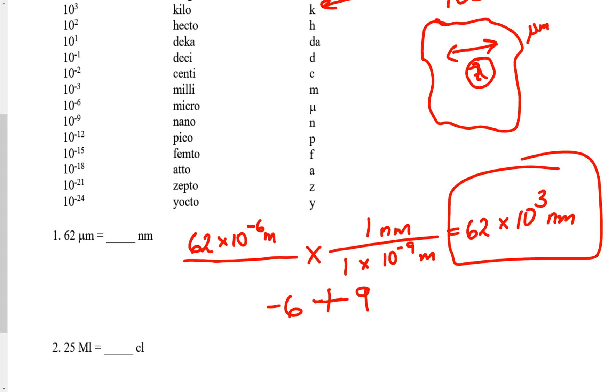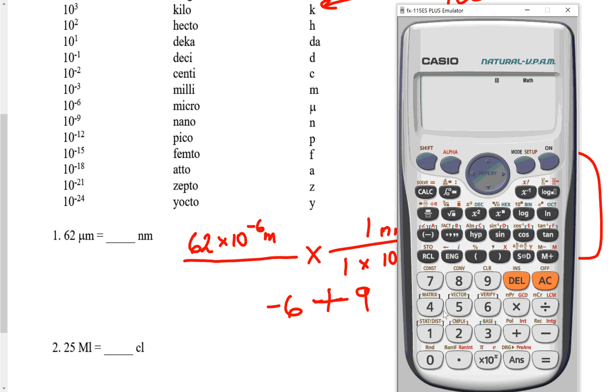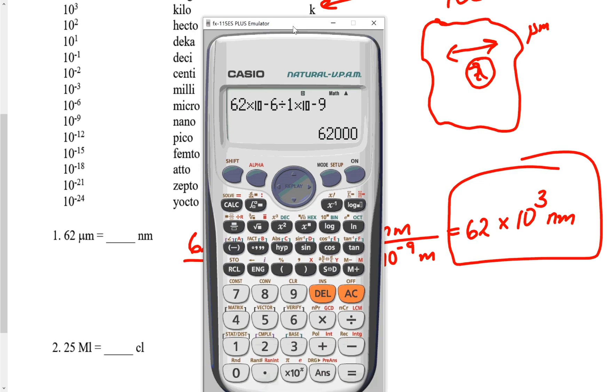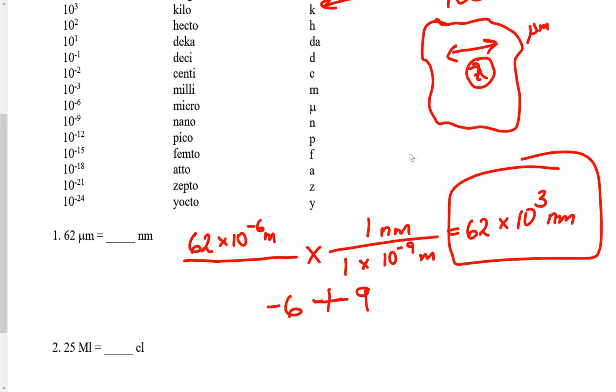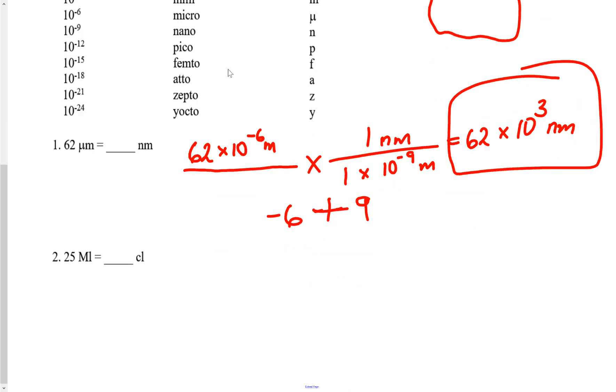If you're really struggling, you could break out your calculator and plug it in. 1.62 times 10 to the negative 6 divided by 1 times 10 to the negative 9, and lo and behold, we get 1,620, which is 1.62 times 10 to the third. That's what's so beautiful about this. It's so fast.